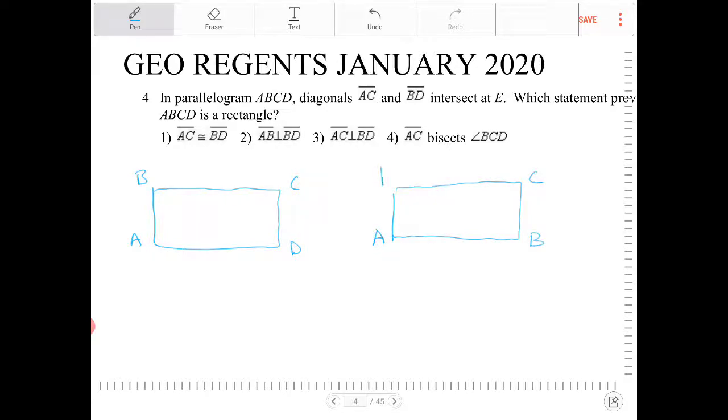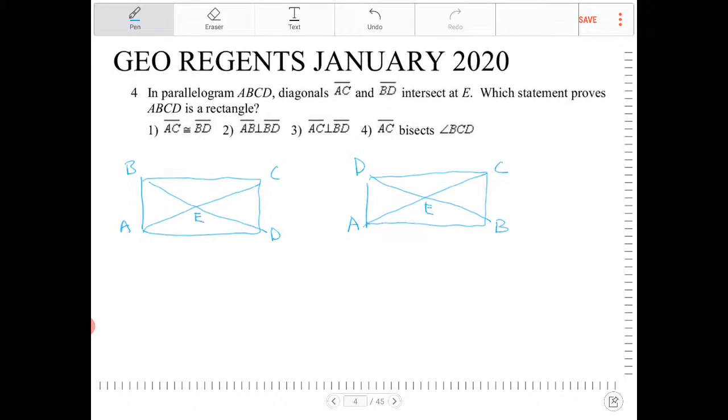Because if you look at this, it says AC and BD intersect at E. Let's see here. AC and BD, those are indeed the diagonals, they intersect at E. It doesn't change the situation at all if you draw it in a clockwise or a counterclockwise orientation if they don't specify.